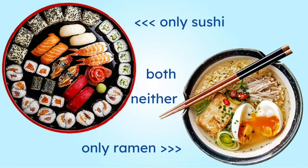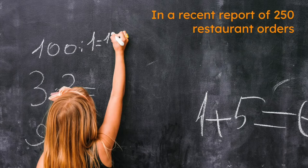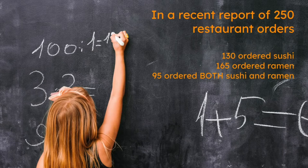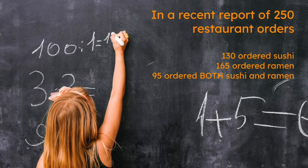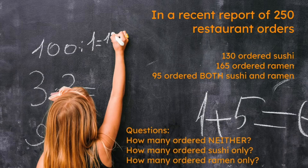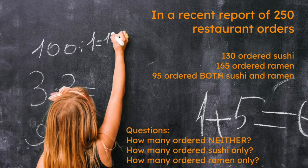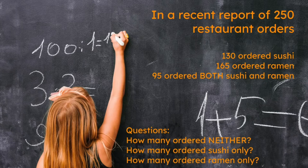For example, let's say you've collected 250 of the most recent restaurant orders at your place. And you found out that 130 of the check ordered sushi. 165 ordered ramen. 95 ordered both sushi and ramen. Some questions that may arise: how many people ordered neither sushi nor ramen when they come to your restaurant? Even though your restaurant's name is sushi and ramen. But maybe some people just come for drinks or maybe they just like the company. How many people ordered only sushi? And how many people ordered ramen only?